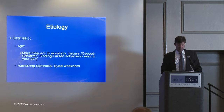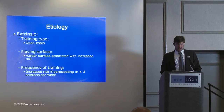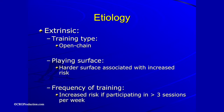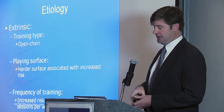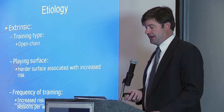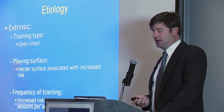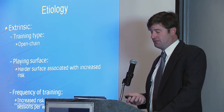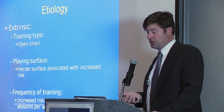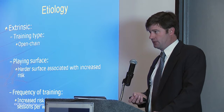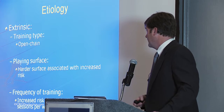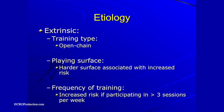Intrinsic factors include age — less frequent in young kids whose growth plates are open, which is the weak link. You'll see growth plate inflammation or apophysitis such as Osgood-Schlatter disease, where the patella tendon attaches to the growth plate of the tibial tubercle and becomes inflamed. Sinding-Larsen-Johansson syndrome is at the other end of the tendon at the base of the patella. Hamstring tightness and quad weakness are the cardinal signs. Extrinsic training factors matter too — open chain exercises like leg extensions are problematic. Closed chain exercises such as squats, with the foot on the ground, a platform, bike pedal, or elliptical, are preferred. Harder playing surfaces and higher training frequency also increase the risk.